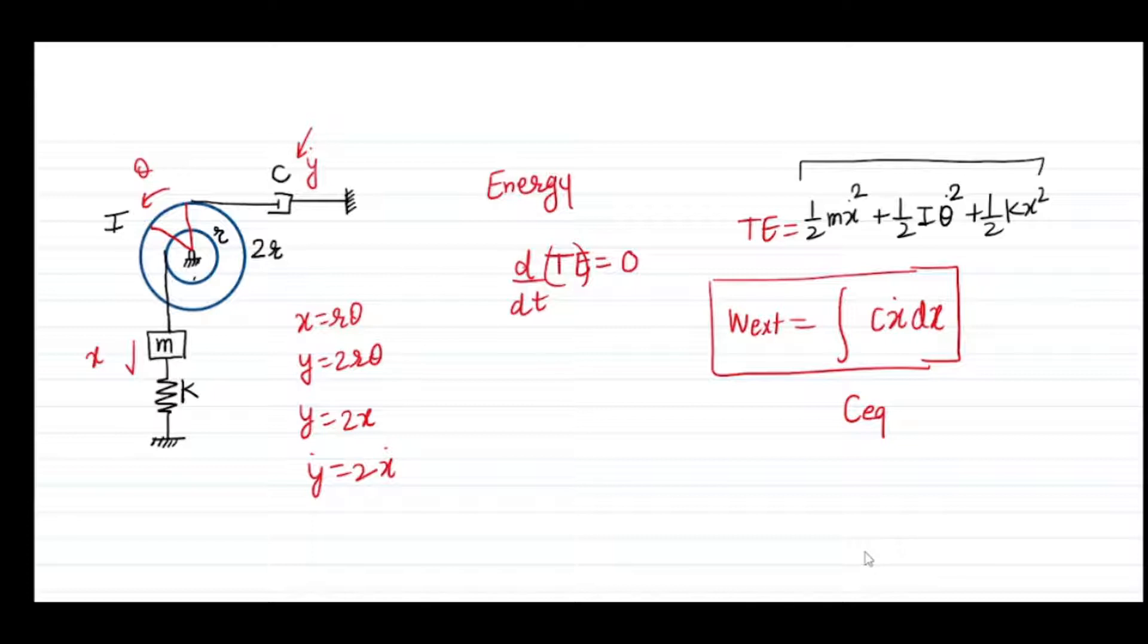At the same time we are writing the work done that I am defining as the external work done because of the damper, and that will be integration of C X dot dX between any two positions of your damper. I will separately integrate this and separately differentiate.